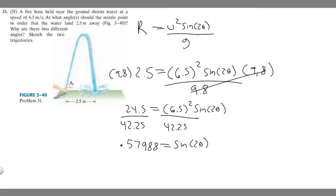So if we want to get rid of the sine, we have to take the arc sine of both sides. That removes the sine. So the arc sine of 0.57988 equals 2 theta.